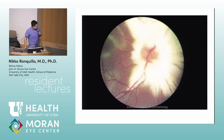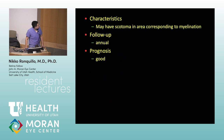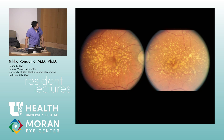Next — myelinated retinal nerve fiber layer. Associations: myopia and amblyopia — those are the ones tested. It's usually unilateral. Myelination occurs anterior to the lamina cribrosa.